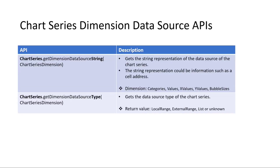Doing a little deeper dive into the data source APIs — there's a set of two: get the string and get the type. This will let you get the address, table name, or other label of the data source, as well as the type, so your add-in can act appropriately. For the chart series, you can see if it's a local range or a list, and then act accordingly based on that information.